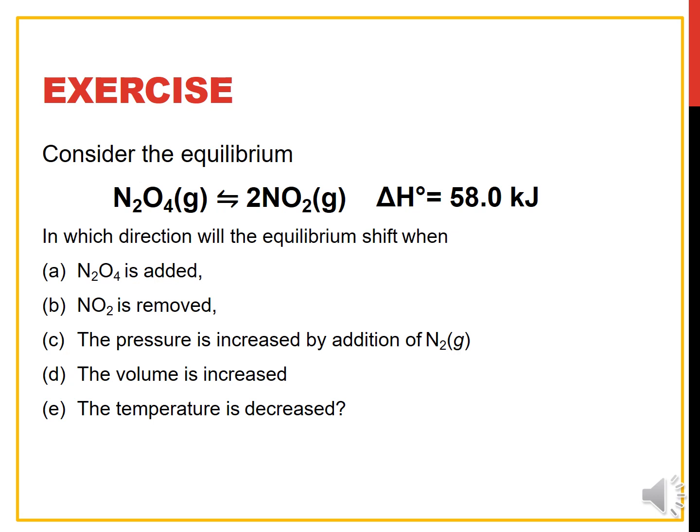For the final exercise: N₂O₄(g) ⇌ 2NO₂(g) with a given ΔH. If N₂O₄ is added, we produce less of N₂O₄; since it is in the reactant position, we shift to the right. If NO₂ is removed, we produce more NO₂; since NO₂ is in the product position, we produce more product and shift to the right.